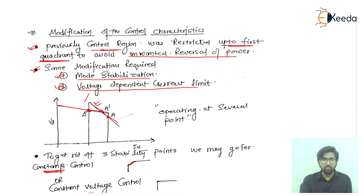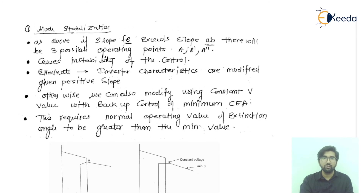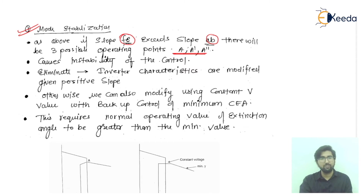In constant beta control, the inverter characteristic is modified in one way, and in constant voltage control, the inverter characteristic is modified differently. Regarding mode stabilization, the slopes fe and abe — which we discussed — have three operational operating points.